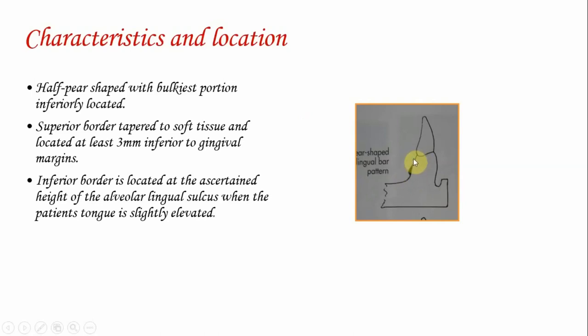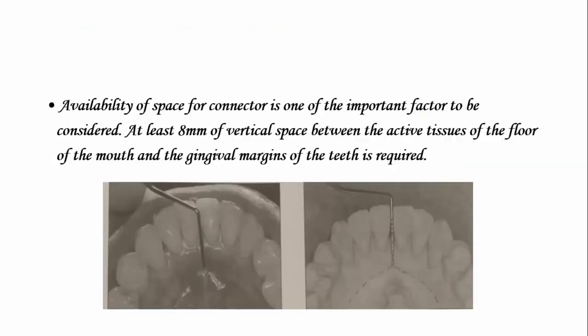The inferior border is located at the ascertained height of the alveolar lingual sulcus when the patient's tongue is slightly elevated. At least 8 mm of vertical space must be present between the gingival margins of the teeth and the floor of the mouth. This permits the major connector to have a minimum height of 5 mm and allows 3 mm of space between the gingival margins and the superior border of the bar. Failure to provide 3 mm of space may lead to irritation of adjacent soft tissues. In a clinical setting, the available space may be measured using a periodontal probe.